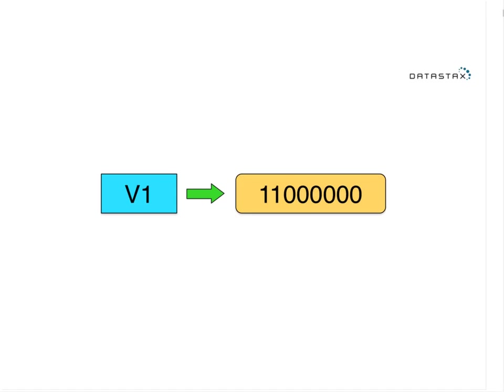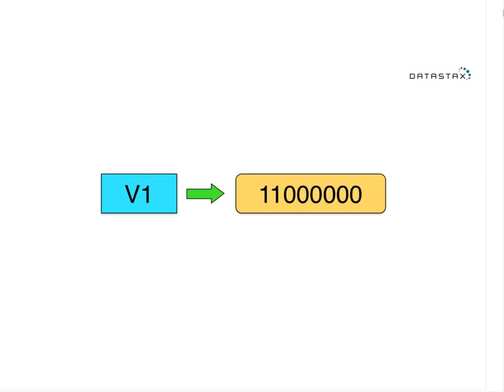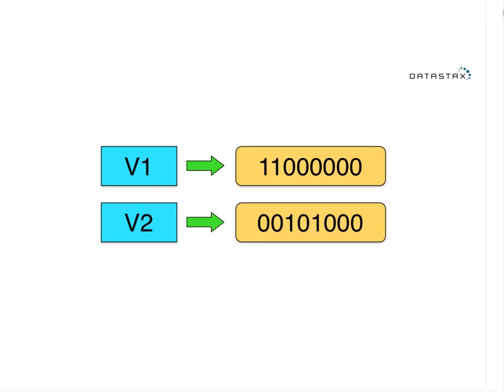A bitmap works by assigning each value a one or a zero in a bit vector. ID 1 corresponds to the first bit, ID 2 to the second bit, and everything else is zero. This means IDs with the value v1 have their corresponding bits set to on. This moves from a string representation, which isn't dense, to a bit representation, which is extremely dense — about as dense as you can get before run-length encoding.